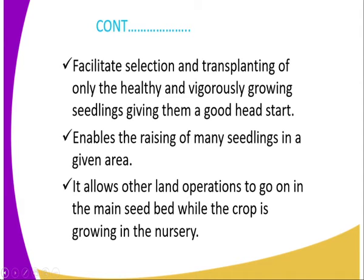This means that the big seedlings on the nursery bed are uprooted and transplanted to the main seed bed, while the younger ones are left to continue growing. Then, a nursery bed enables the raising of many seedlings in a given area. The nursery bed normally carries a lot of seedlings per unit area, meaning there is no competition for nutrients because nutrients can be provided adequately.